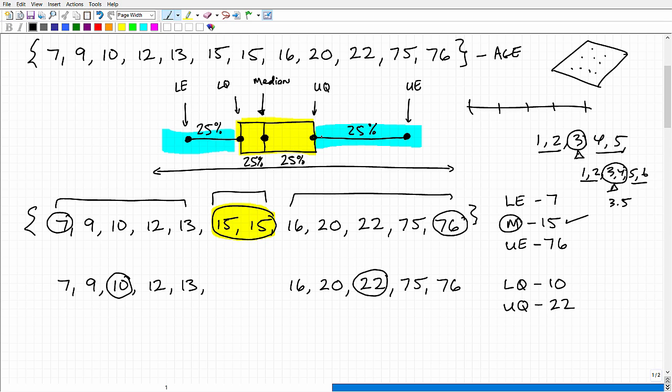Now, the other two points are extremes. So our lower extreme is the lowest value in the data set, and that's easy. That's seven. And then the highest value in the data set, that's our upper extreme. That's 76. All right, so we got seven, 15, and 76. So we need those three points.